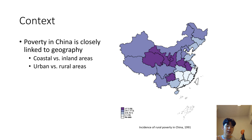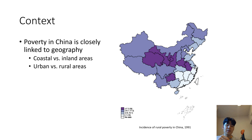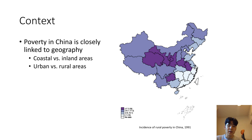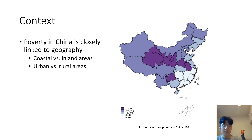For example, in China poverty is closely linked to geography. You'll see in this visual that the majority of the impoverished counties are rural and inland. However, even amongst these counties there may be pre-existing differences that can alter the effectiveness of the program. For example, one of these counties may be experiencing adverse shocks to their economy, which would downplay the effectiveness of the poverty alleviation program.